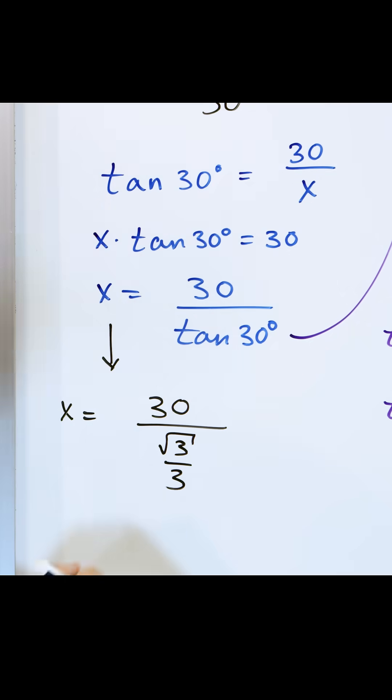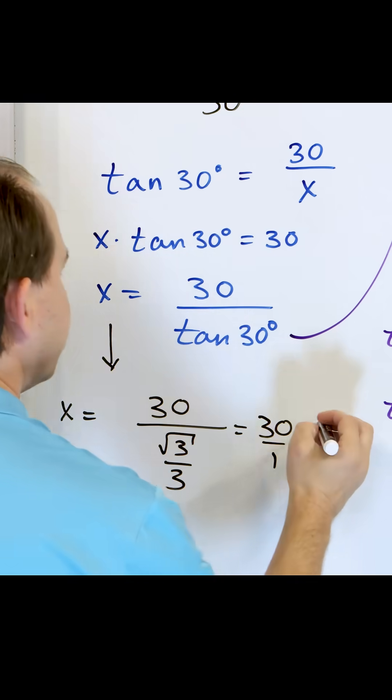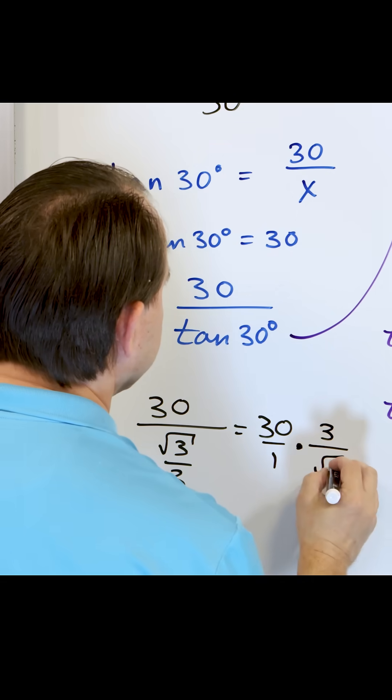And you're like, oh, another fraction, wonderful. So what we do is we make it 30 over one times, flip this and multiply three over square root of three.